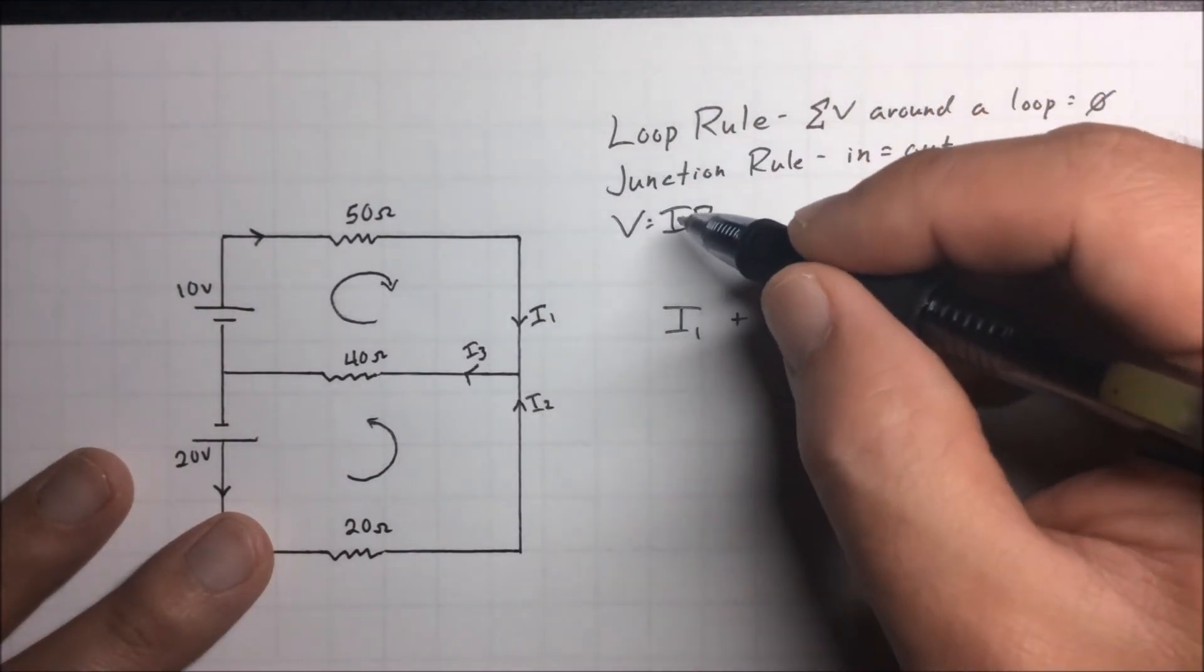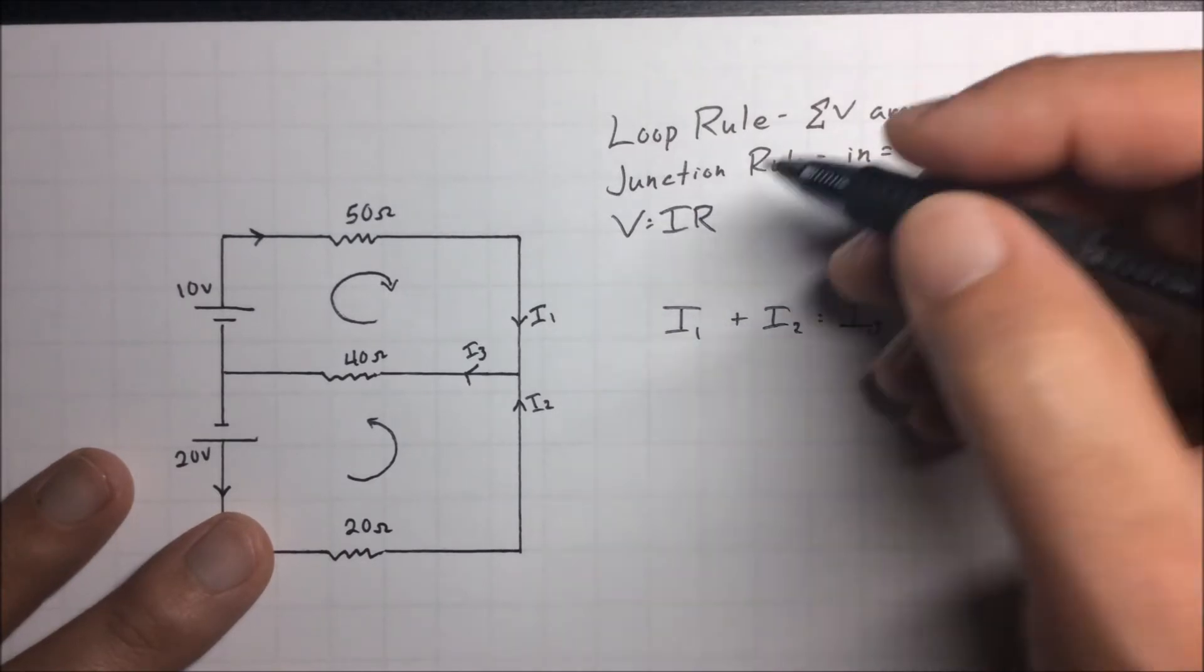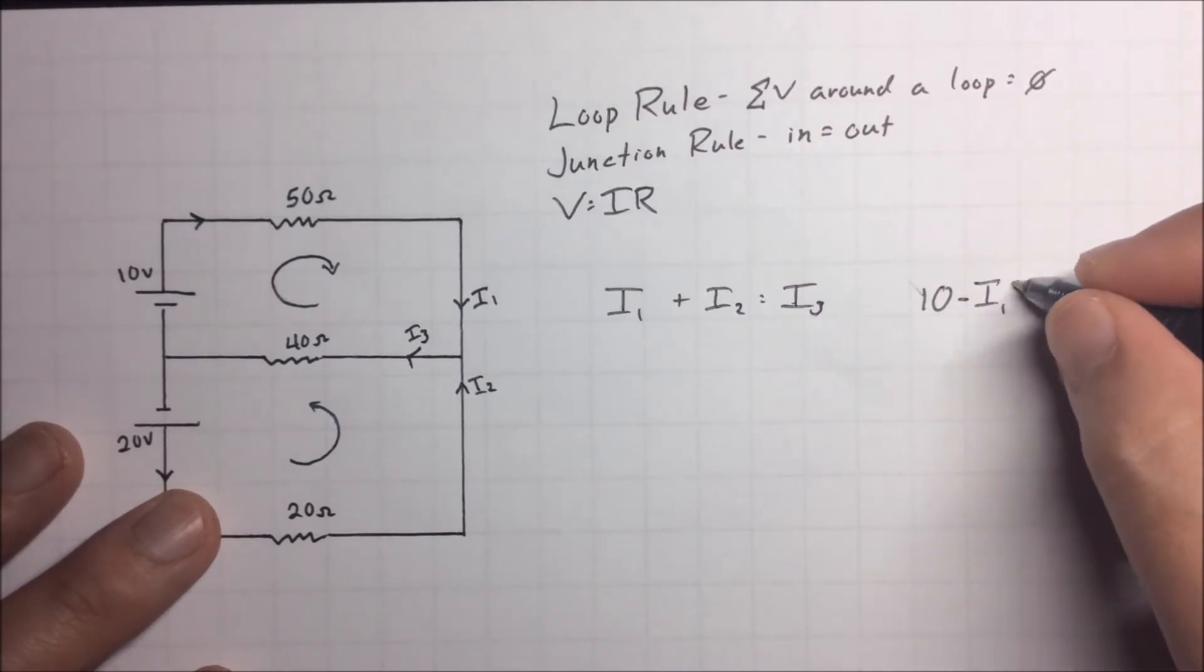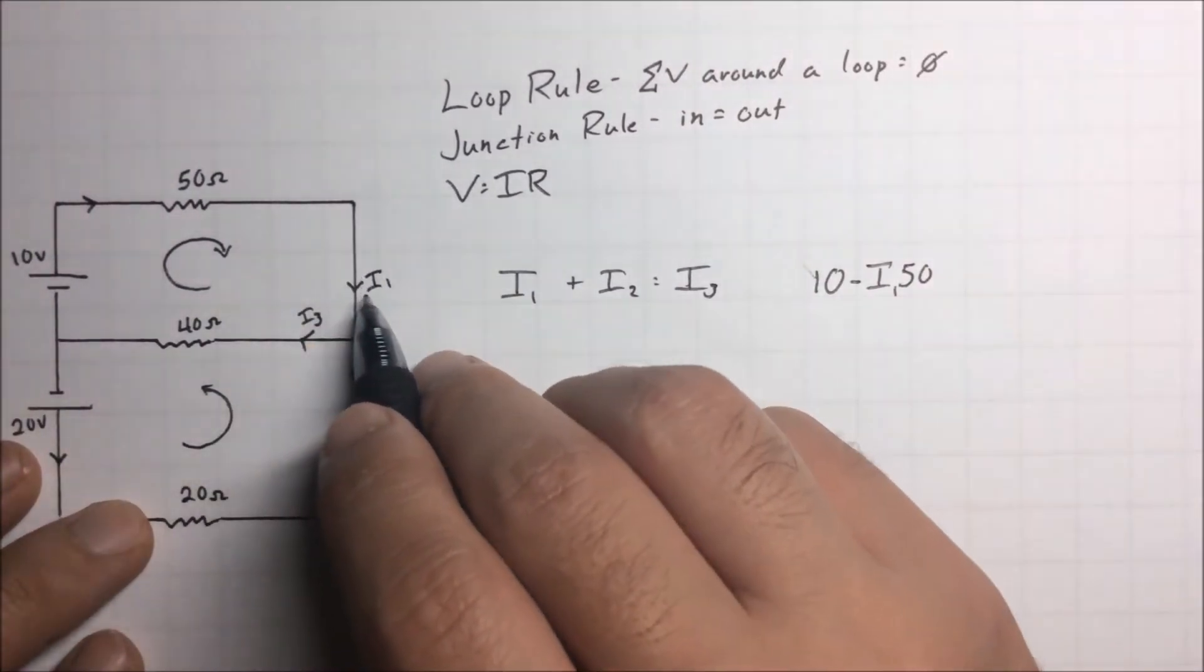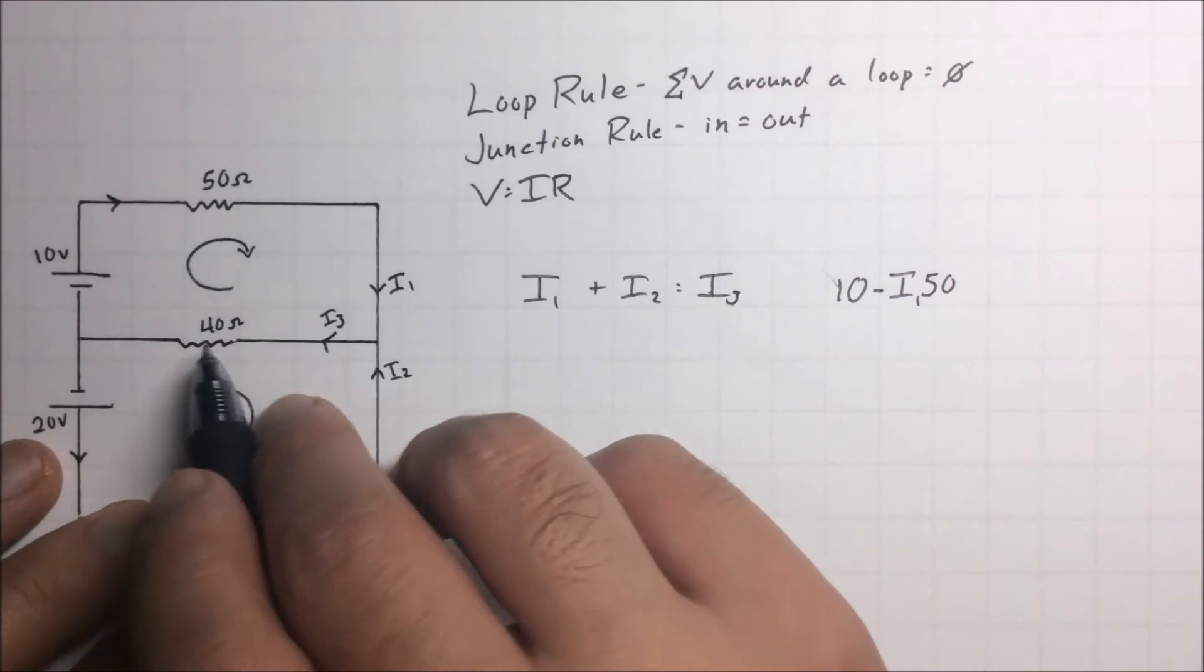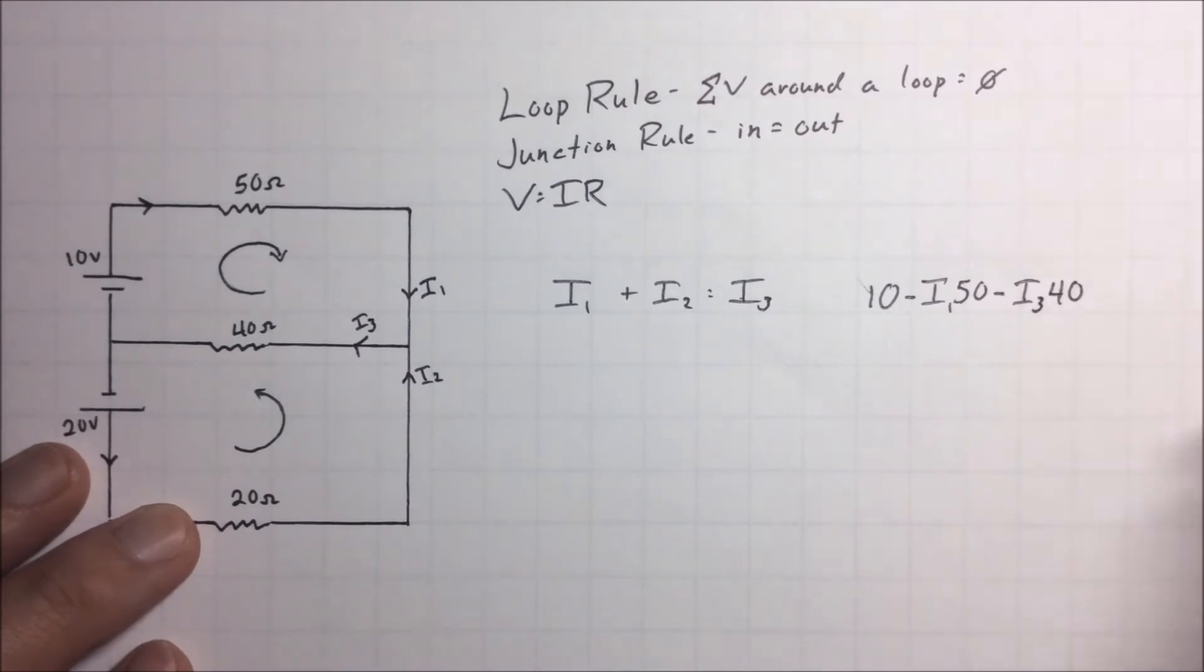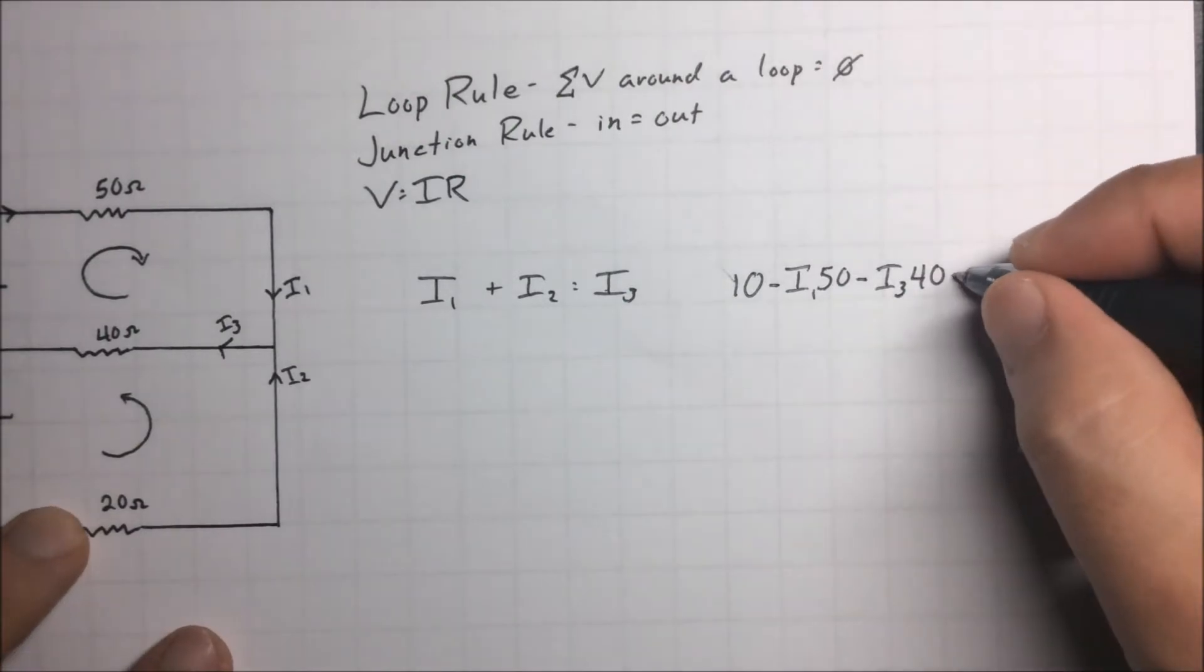So with the top loop I'm going to start off with the battery and we're going to say that the battery is providing 10 volts of potential difference to start off. We're going to run through a resistor here and what we know is that the voltage or the potential difference of a resistor is going to be dependent upon the current and the resistance of whatever you're running through. So we're going to say 10 minus I1, that's going to be I1 and then R that's going to be 50. We're going to keep on going and we're going to switch from I1 over to I3, I3 is going to go through our 40 ohm resistor so we're going to have a minus I3 and R40 and we're going to be all the way back to the battery again. And by the loop rule we should have this equaling zero.